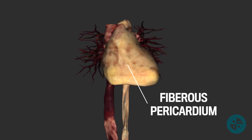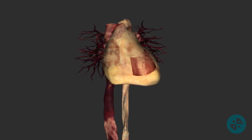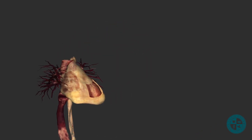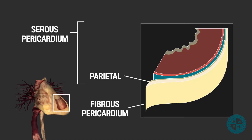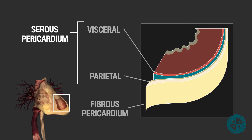The most superficial component of the pericardium is referred to as the fibrous pericardium. If we then take our scalpel and make a cut into the pericardial sac, we would find the first part of the serous pericardium directly deep to the fibrous pericardium. This first layer is referred to as the parietal layer of the serous pericardium. Together, the fibrous pericardium and the parietal layer of the serous pericardium form the pericardial sac. The next layer is the visceral layer of the serous pericardium, also known as the epicardium.